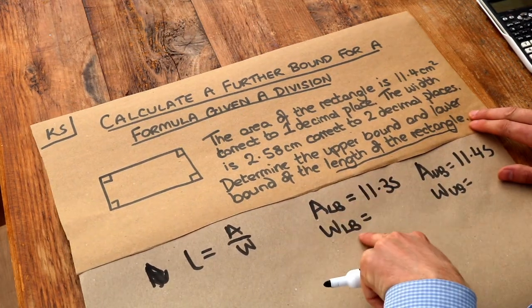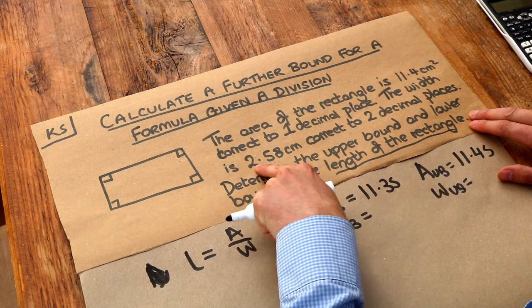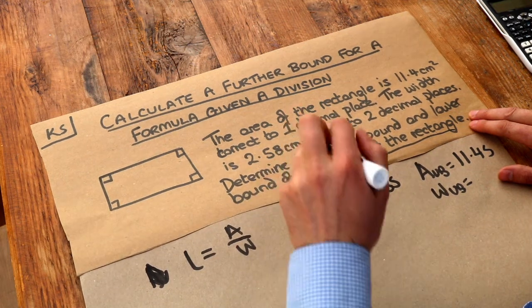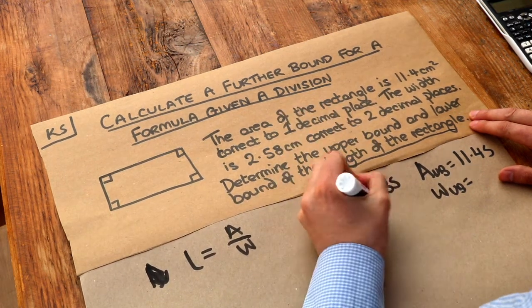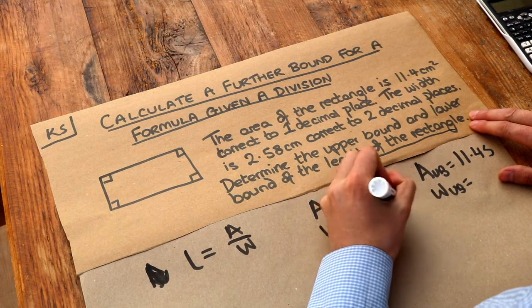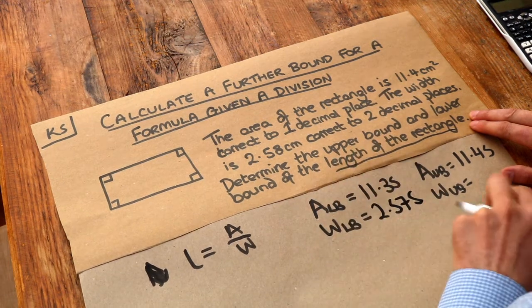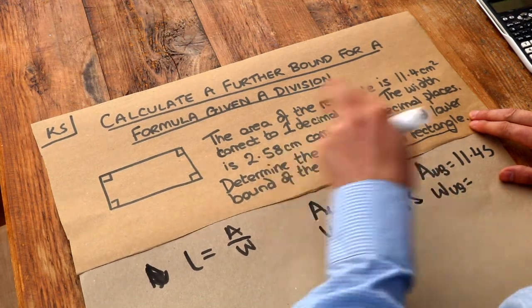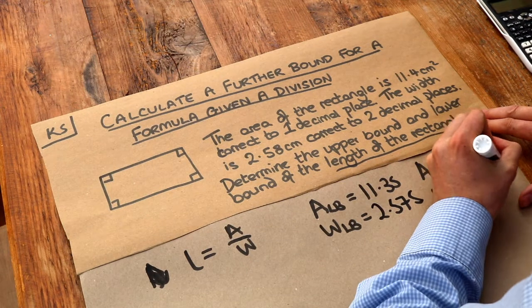What about the lower bound for the width? This is 2.58. So the lower bound — if we reduce the last digit by one and stick a five on the end — we get 2.575. And the upper bound, stick a five on the end, gives us 2.585. So we now have these quantities.